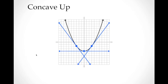Before we go to inflection points, it is good to recall the difference between concave up and concave down. A function is concave up if the graph of the function always lies above the tangent line on that interval. Notice that in this parabola, you can draw a line tangent at any given point, and the graph will always be above those tangent lines. So this parabola is concave up at any value of x.